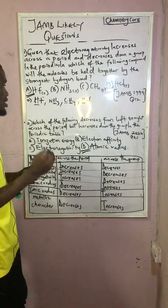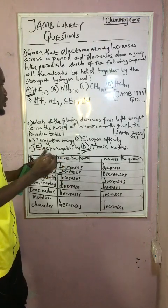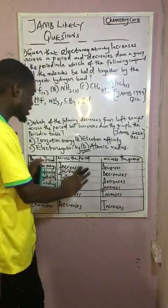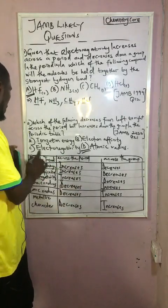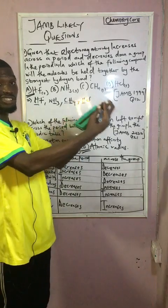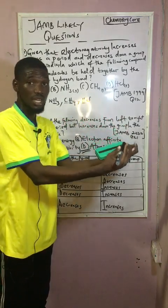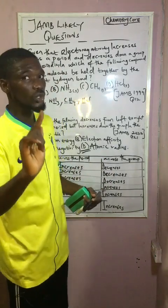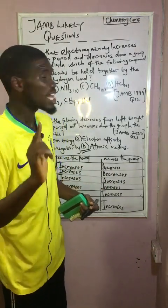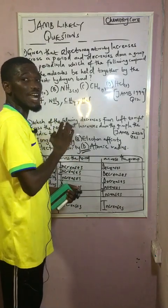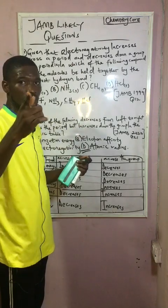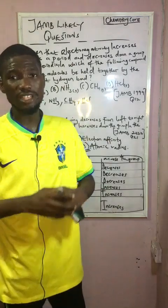Our answer is atomic radius because it decreases from left to right across the period but increases down the group in the periodic table. The table illustrates the periodic trends — how properties increase across the period and decrease down the group. This video is for JAM students having issues identifying increases or decreases in periodic trends. Don't forget to subscribe, like, comment, and share.